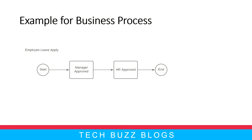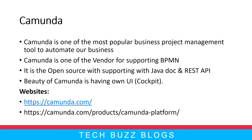There are a lot of BPMN vendors — IBM, Oracle, Activiti, etc. — but Camunda is also one of the vendors. Why choose Camunda? Camunda is one of the best open-source tools, and that is the main advantage. In other words, Camunda is a business process management tool that automates your business. It also supports Java SDK as well as REST API.